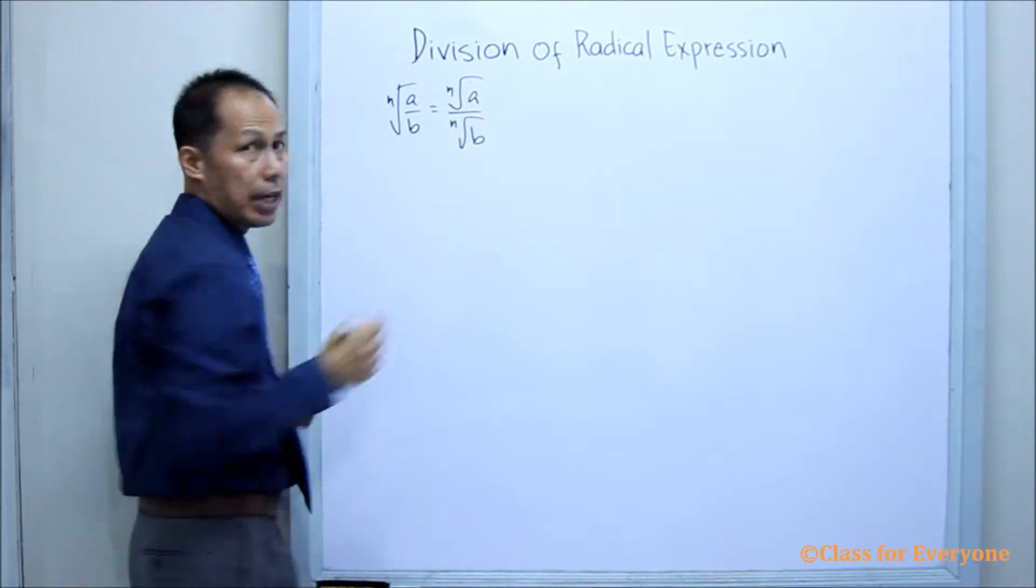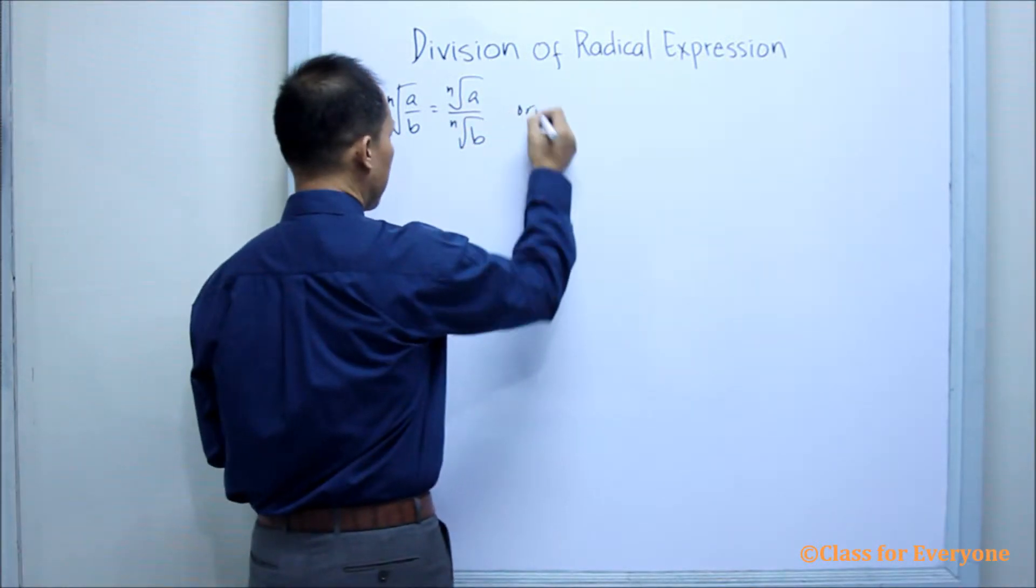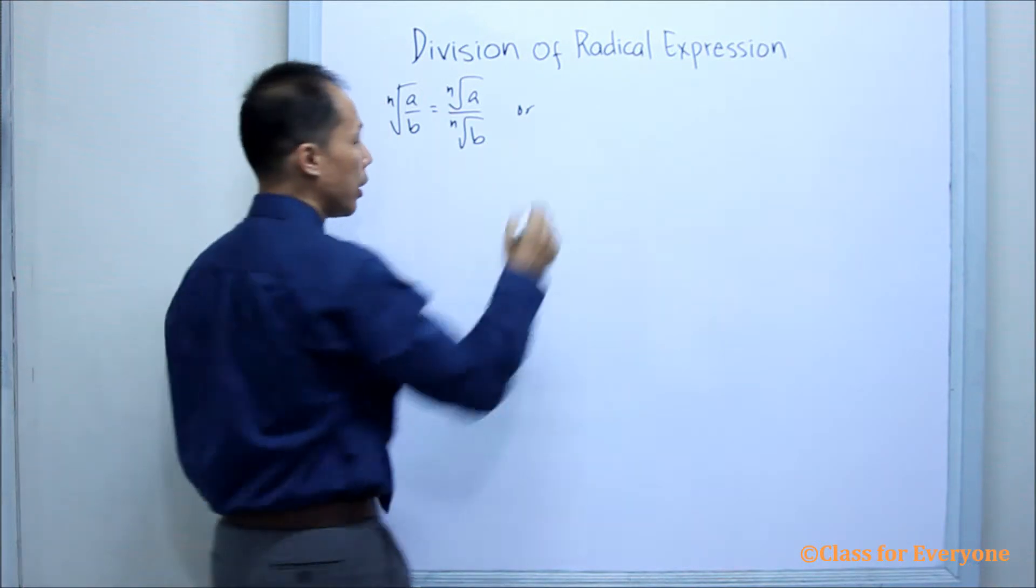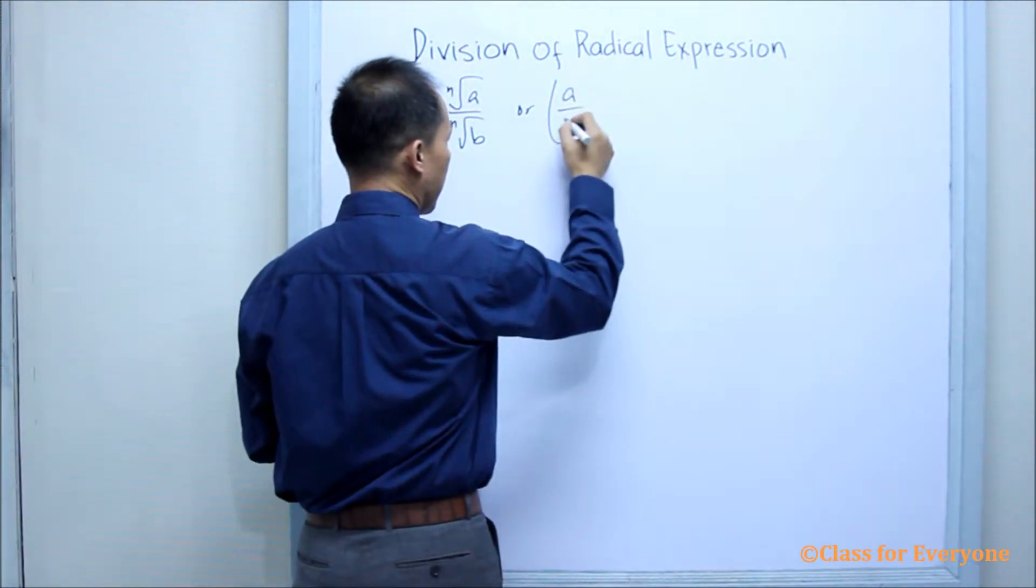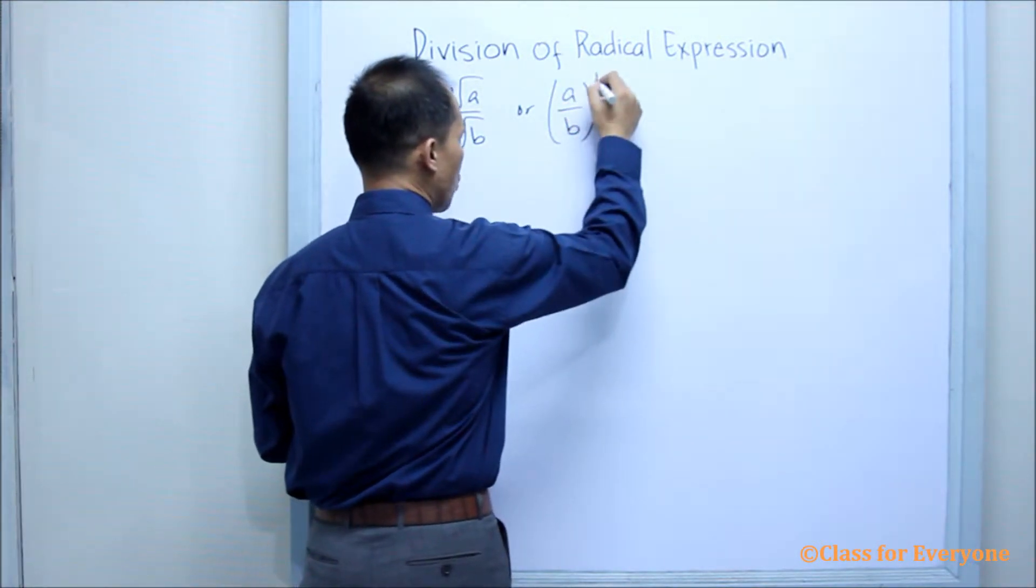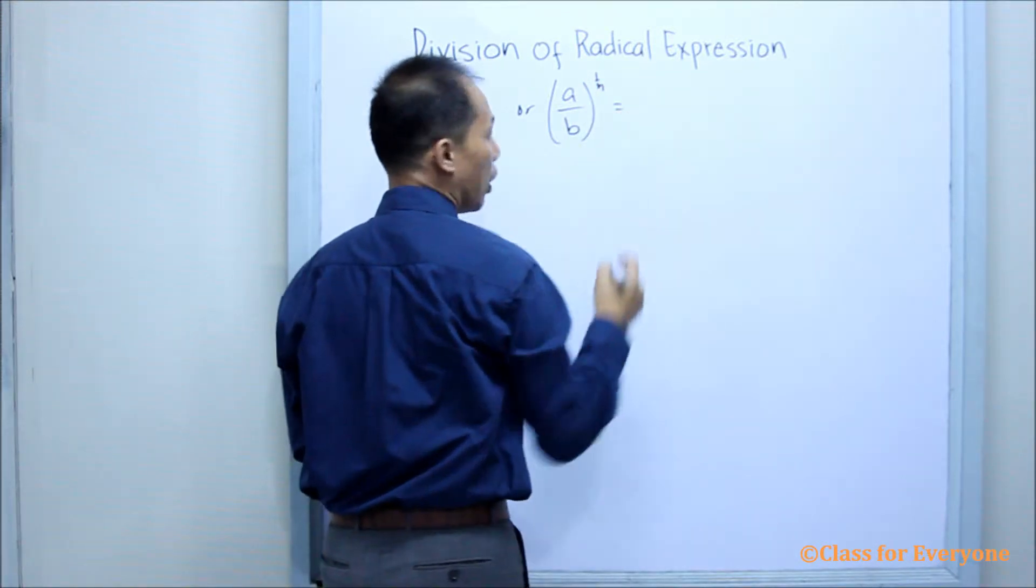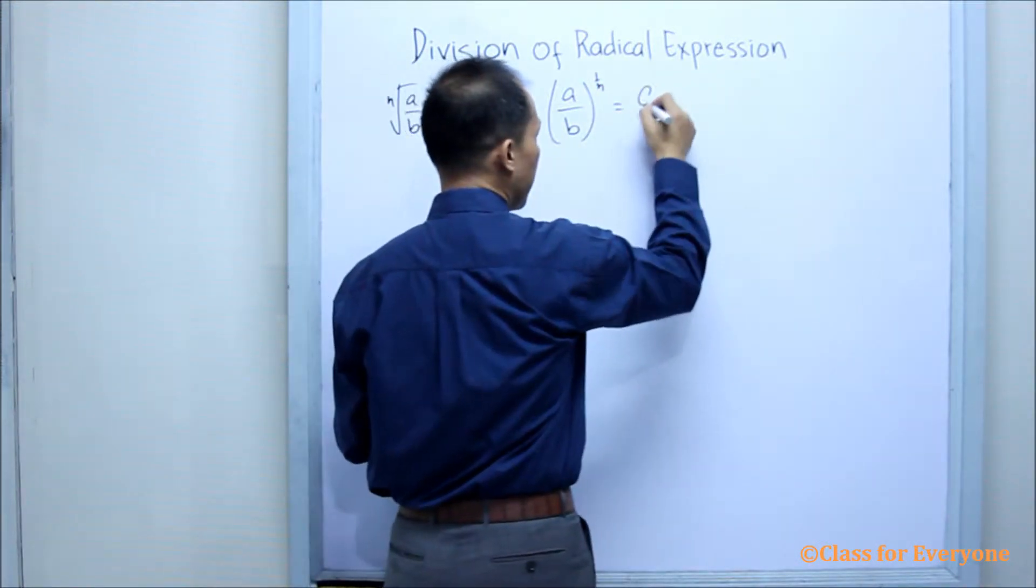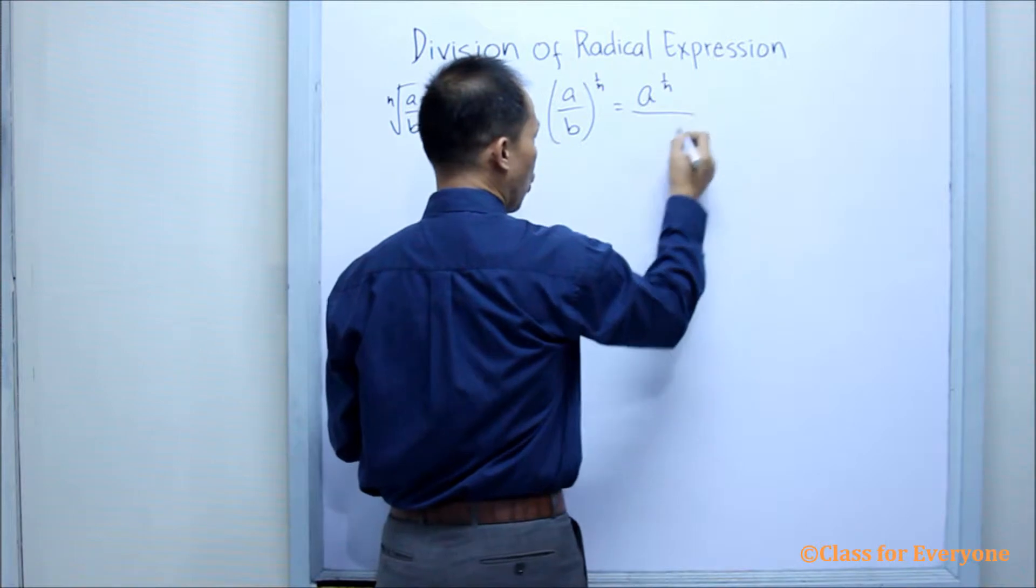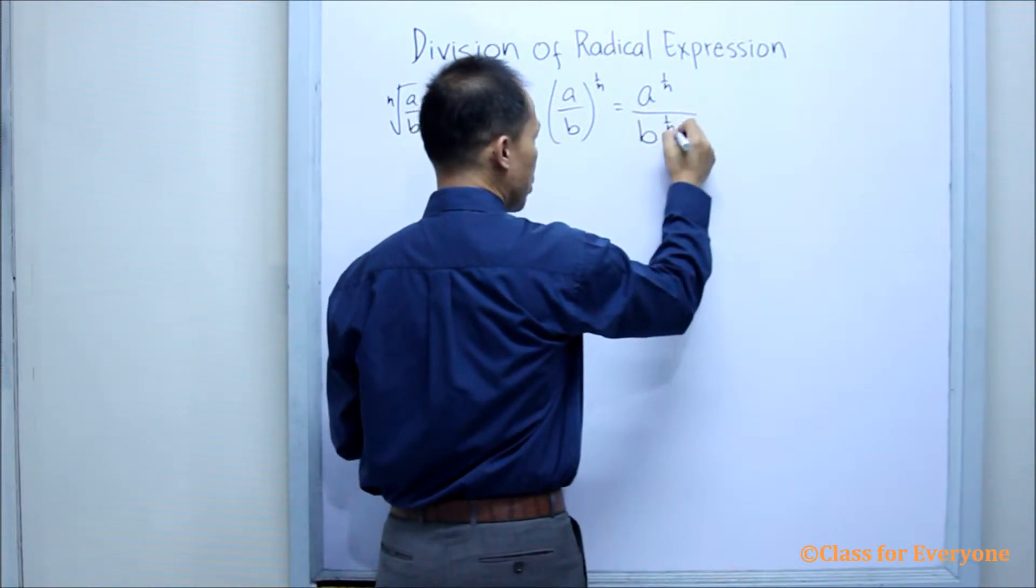Or the quantity a over b raised to 1 over n is equal to a raised to 1 over n over b raised to 1 over n. And that is what we are going to use.